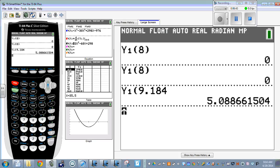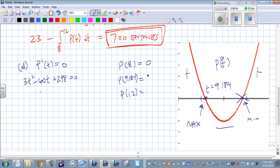And I do 2nd, enter one more time. And let's put 12 in there. We get 8. So we had 0, 5.089, and 8.